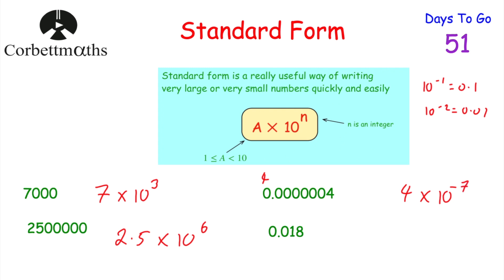There's a useful shortcut here. A student once pointed out: for 4 × 10⁻⁷, there are 1, 2, 3, 4, 5, 6, 7 zeros in front of the number. So to find the power, just count the number of zeros in front of the significant digit. That gives you the negative power. This is actually the approach I use for small number standard form questions — just count the zeros in front and write that as the negative power.